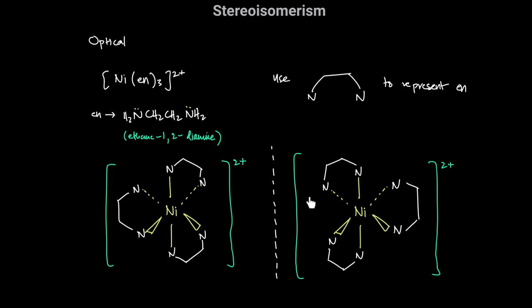This structural formula represents two different complexes — it could be one optical isomer or the other. The coordination number is six because three bidentate ligands each make two dative bonds, giving 3 × 2 = six coordinate bonds. We only consider optical isomerism for octahedral complexes, and when you have three bidentate ligands the complex will always exist as two possible optical isomers.